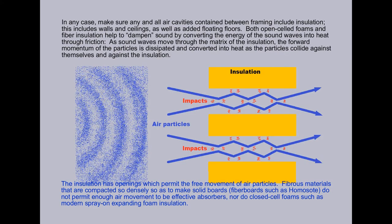In any case, make sure that any and all air cavities contained between framing include insulation. This includes walls and ceilings, as well as added floating floors. Both open-celled foams and fiber insulation help to dampen sound by converting the energy of the sound waves into heat through friction. As sound waves move through the matrix of the insulation, the forward momentum of the particles is dissipated and converted into heat as the particles collide against themselves and against the insulation.